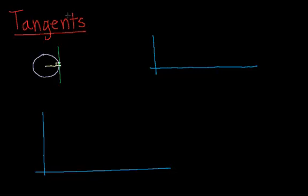Tangents as applied to curves are very similar. Say I had this curve right here. If I were to draw the tangent line of this point right here, I would get a line that's horizontal. And if I were to draw one right here, I would get a line that's diagonal and upward.